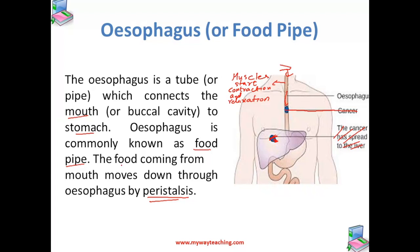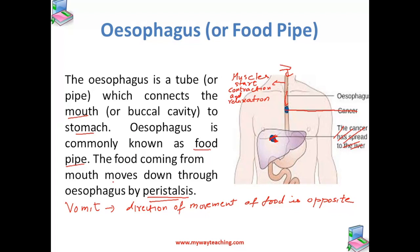Now the question arises: the esophagus is contracting and relaxing, pushing the food down — so what happens when we vomit? In vomiting, the food comes from the stomach back to the mouth, meaning the direction of food movement is opposite. This process is called anti-peristalsis.